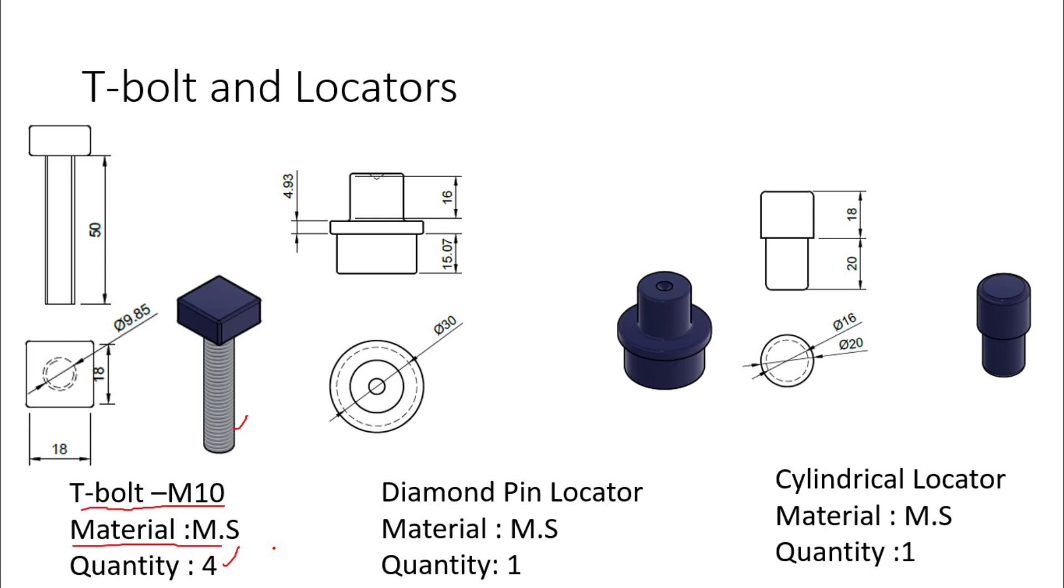We will use four T-bolts to fix the fixture plate with the milling machine table. Two locators, one is diamond pin locator and one is cylindrical locator with material of mild steel, are used to locate the component. Here we can observe the dimensions of the locator. This type of locator is directly purchased in the market or we can also produce as per our requirement, but generally we directly adopt this type of locator.